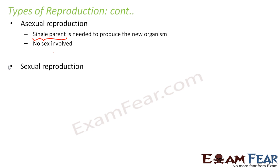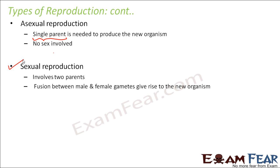In sexual reproduction, two parents are involved — a mother, a father, a male and a female. Fusion between the male and female gametes gives rise to the new organism. Gametes are specialized sex cells which combine together to form one cell, which then multiplies and grows bigger, forming a new child. So in sexual reproduction you need two different sexes.